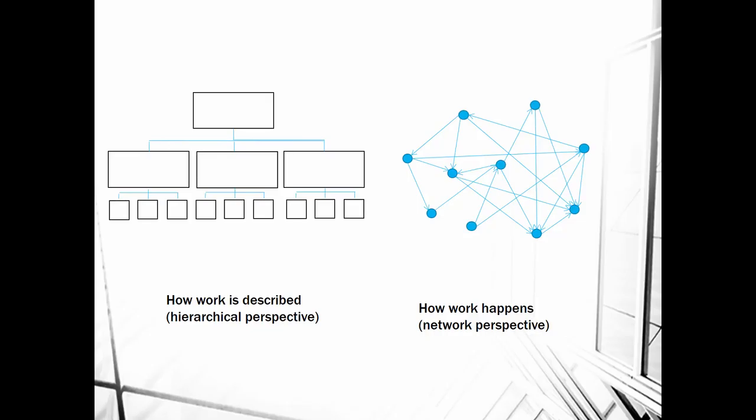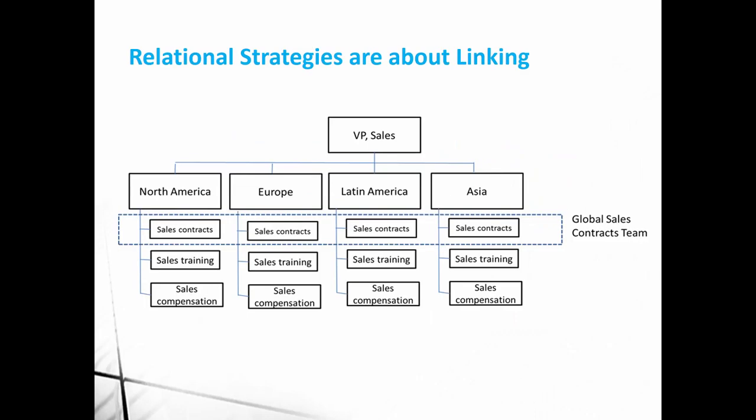People are interacting across those division or department boundaries. They're negotiating, talking to somebody in a different group, collaborating with people in different departments based on different areas of expertise. A lot of work in an organization happens by a natural, fluid, organic, network-type perspective. So it's that network and relational perspective that we're going to talk about here.